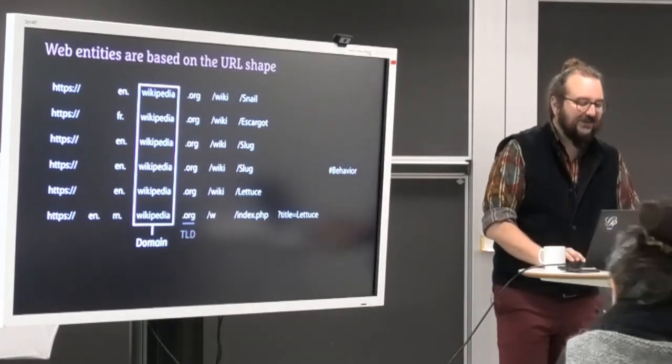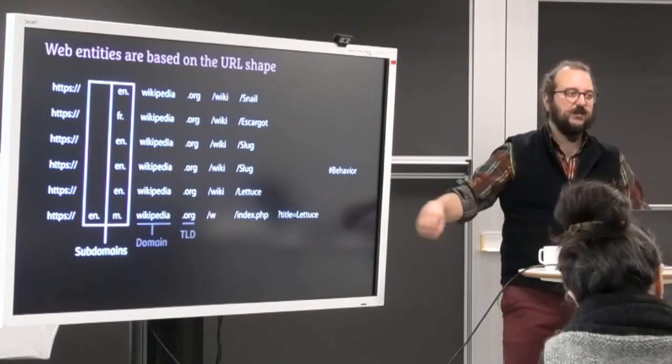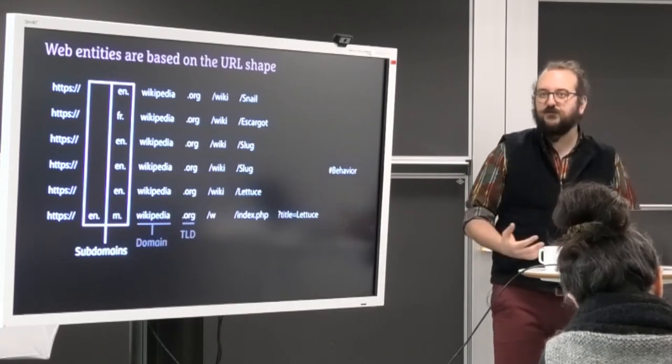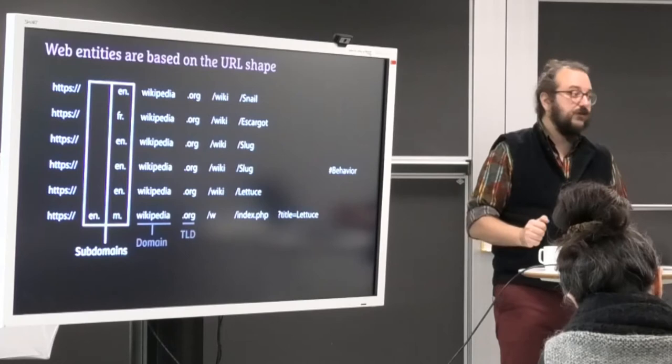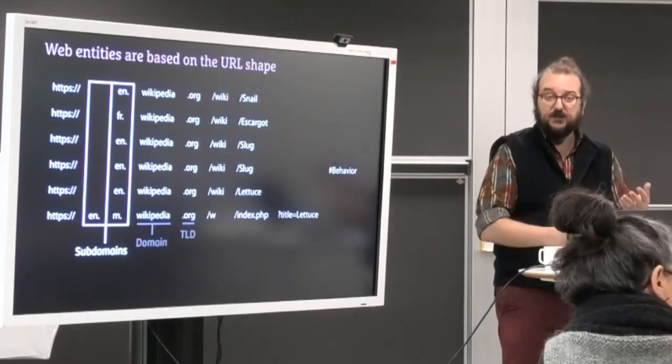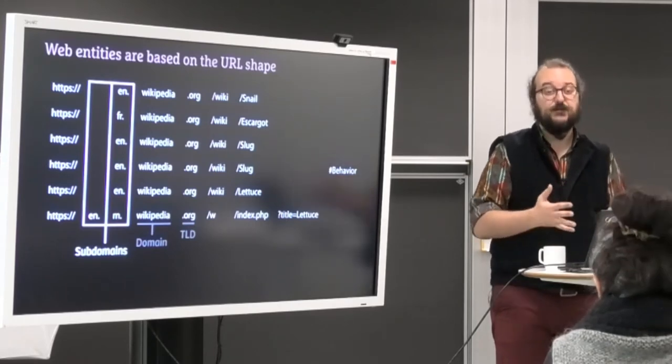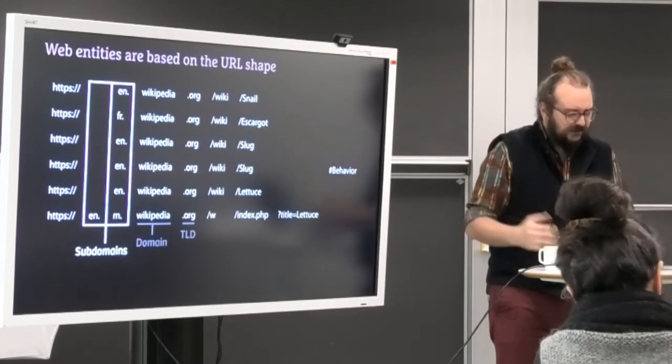So you have then subdomains. So they are the things that are something dot something dot something that are before the domain. And it's used for instance for sometimes a lab in our university. So the university is au.dk. If you have a lab inside that or a service, it might be, I don't know. The IT services might be something like its.au.dk. You get the idea. Sub part of the institution.